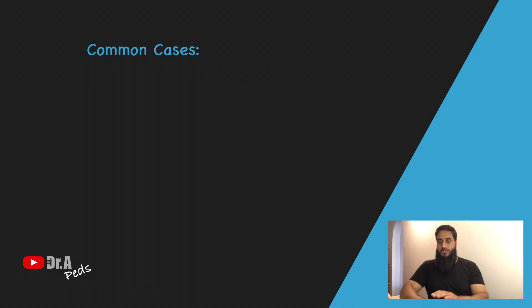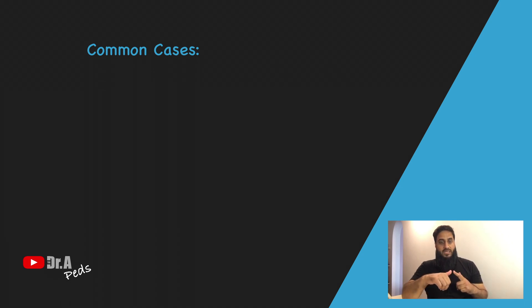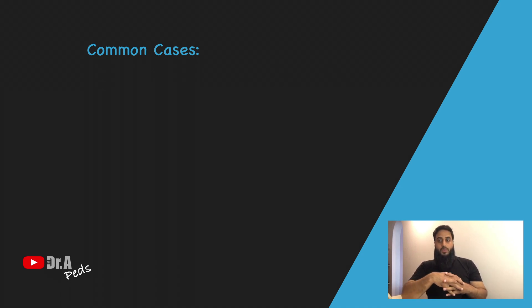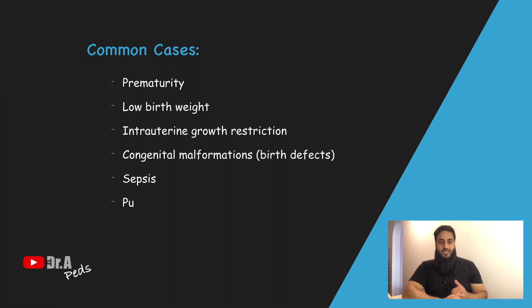Moving on, here are some of the common cases seen in the Neonatal Intensive Care Unit. These include prematurity — babies who do not complete their gestational term. We also see low birth weight babies and IUGR, intrauterine growth restriction babies. There are also congenital malformations, birth defects, sepsis, pulmonary hypoplasia, birth asphyxia, and others. You can go through this list and remember them.